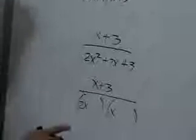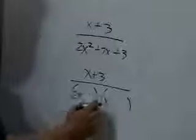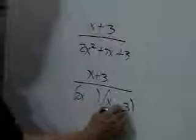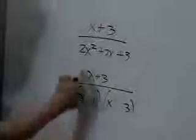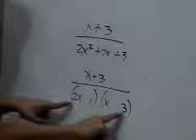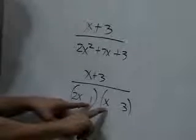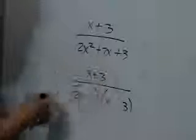For 3, we have 3 and 1. Let's try out 1 here and 3 here and see if we'll get a 7. This is 6x. This is x. And those two will give us a 7x.